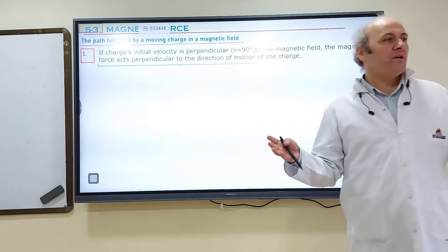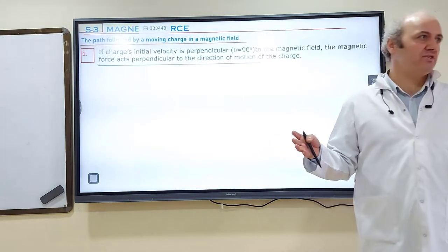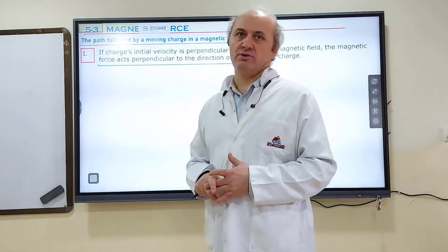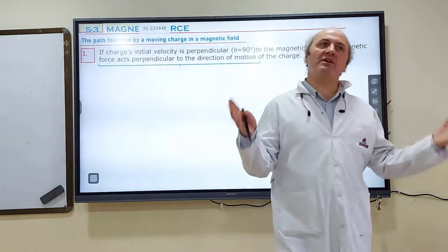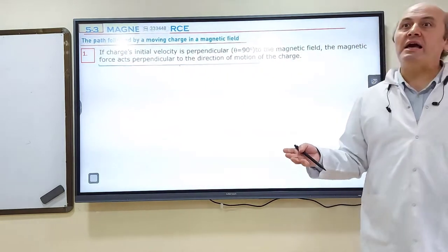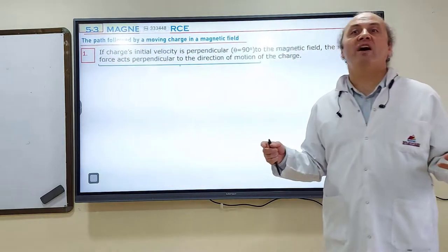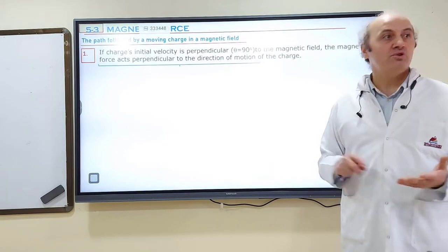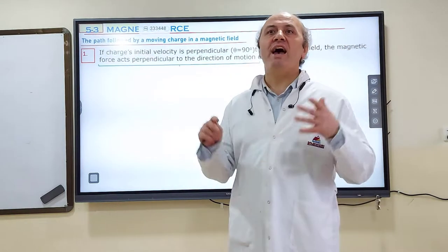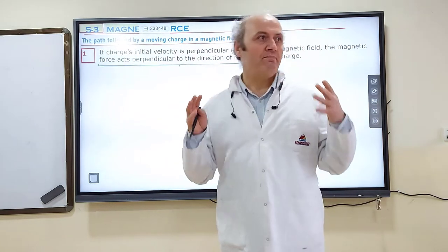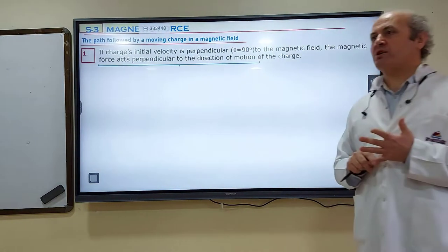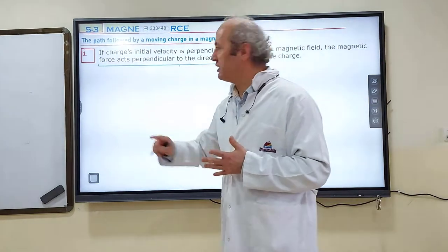Now, what is a force called in physics if it acts perpendicular to the direction of motion? It's called centripetal force. So what does centripetal force do? It causes the object to follow a circular path. Then we can say that magnetic force is a centripetal force — it causes the charged particle to follow a circular path.